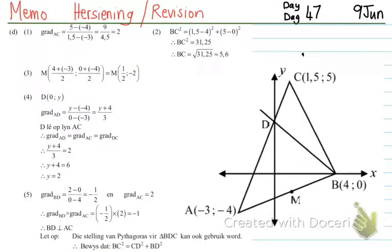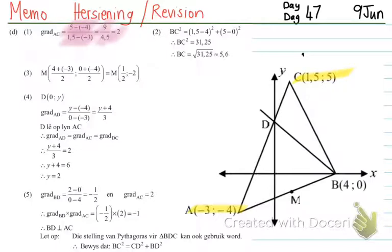Welcome back to the revision memo. The first question says: refer to the diagram alongside, determine the gradient of AC. So for the gradient of AC, we use the coordinates of A and C. If you remember, it's delta y over delta x — the y values subtracted over the x values subtracted. So it's 5 minus negative 4 over 1.5 minus negative 3, which gives me 9 over 4.5, and that is 2. The gradient of AC is 2.